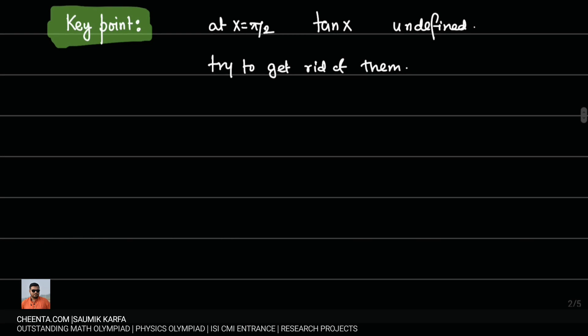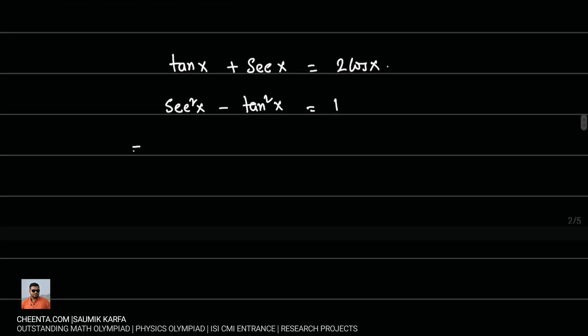Let us start by taking this equation again. tan x plus sec x equals twice of cos x. When we see this tan x plus sec x, we instantly think of the trigonometrical identity sec square x minus tan square x equals 1. Factorizing the left hand side of this identity, we get sec x minus tan x times sec x plus tan x equals 1.